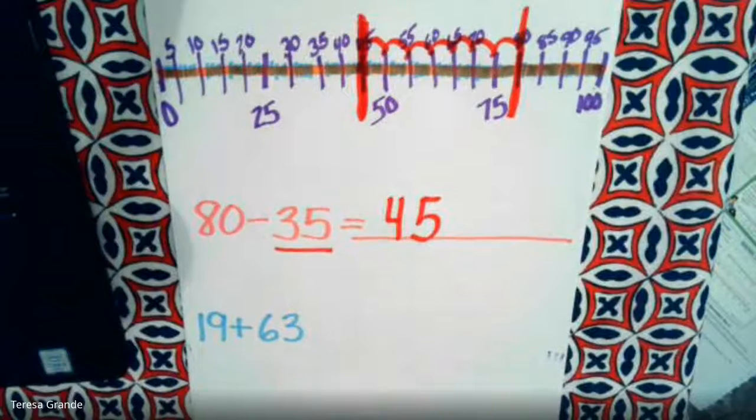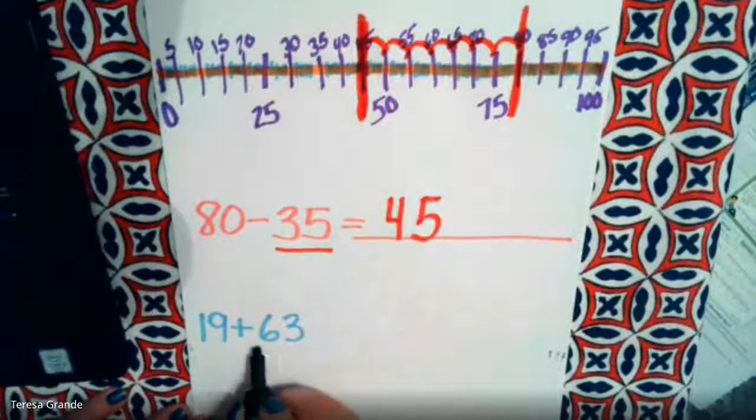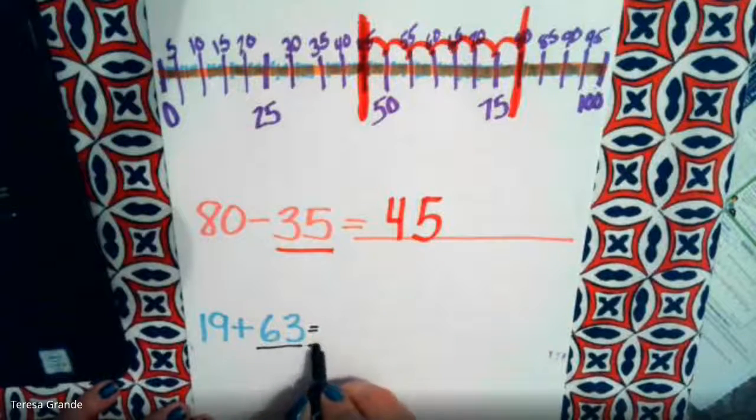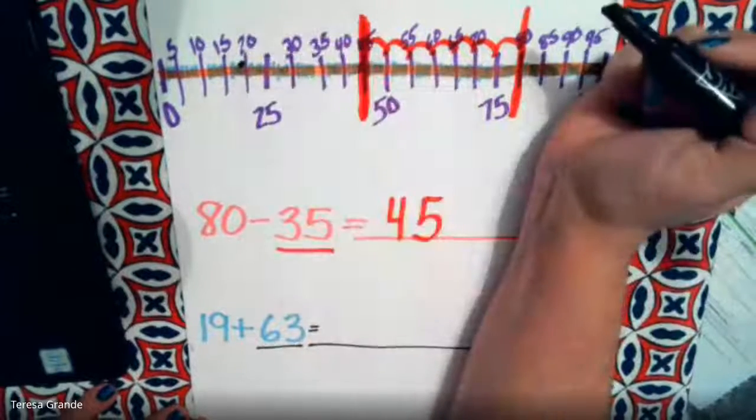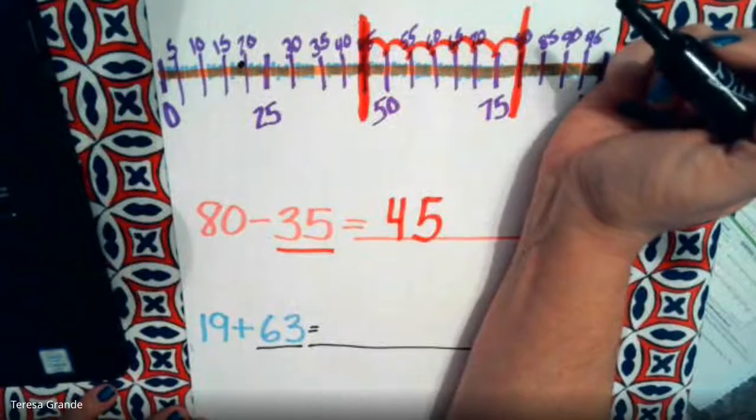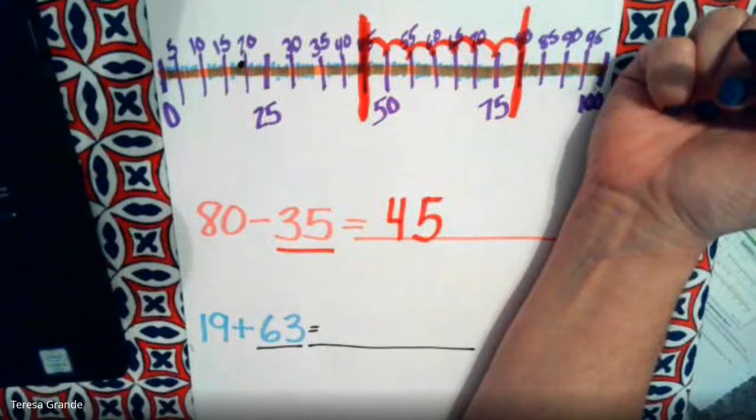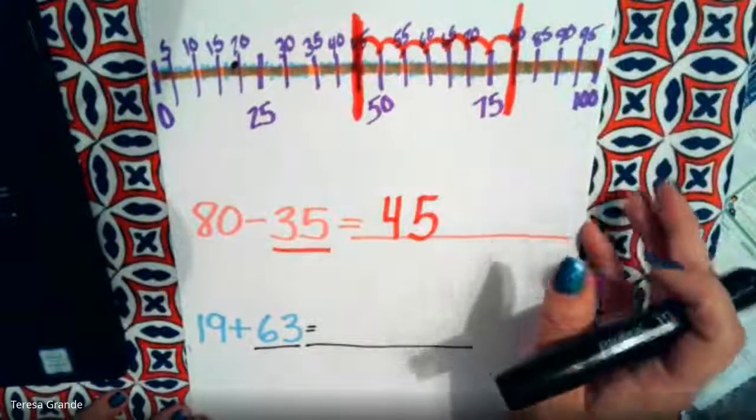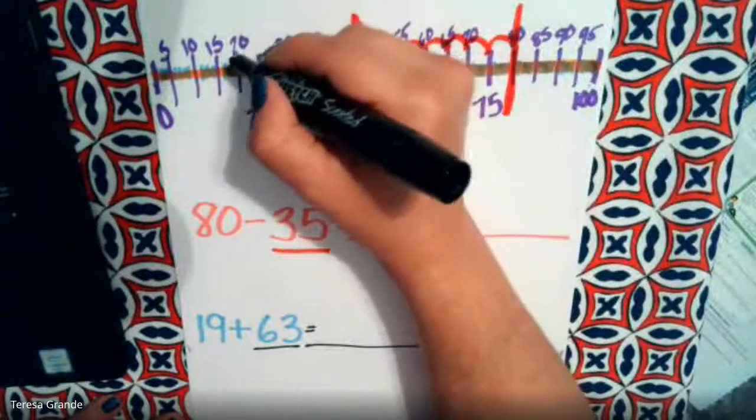Now I'm going to use my black marker again because this is darker, and the number we're going to start on is 19 and we need to add 63. Here's the number 19 right here. What do you think is the easiest way to do this? We can count up 63. You can count by fives. We're at 19, so I think the best way for us to do this is to count up 63.